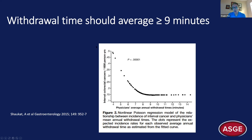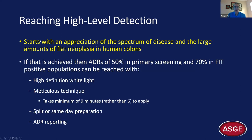We've long used a rule that the minimum average withdrawal time in normal colonoscopies should be six minutes, but studies have shown that interval cancer detection levels out at about nine minutes. Data from the New Hampshire registry showed that detection of serrated lesions also levels out at about nine minutes. So the amount of time it takes to inspect the colon carefully is more like eight to nine minutes than six.